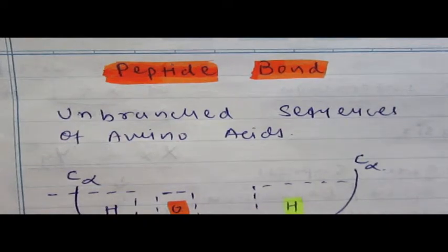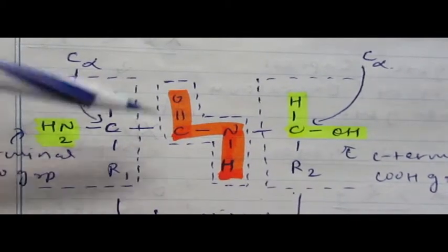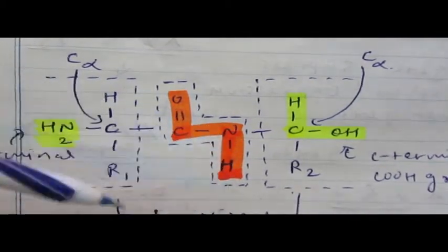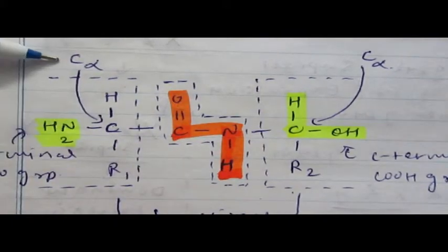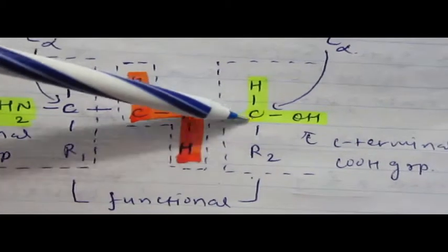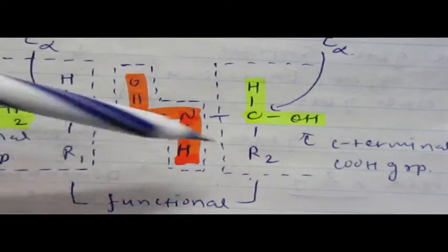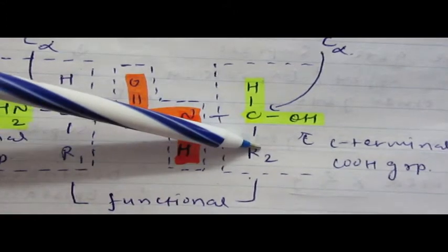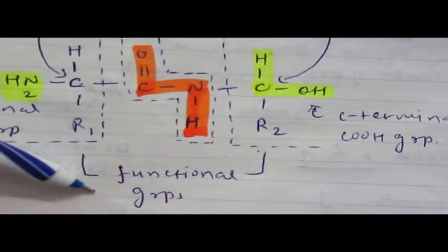With removal of one molecule of water, here is the formation of peptide bond that contains C alpha carbon at the N-terminal with amino group, and another C alpha carbon at C-terminal with carboxyl group. The first C alpha carbon contains R1 group, second C alpha carbon contains R2 group. These R1 and R2 groups are different functional groups.